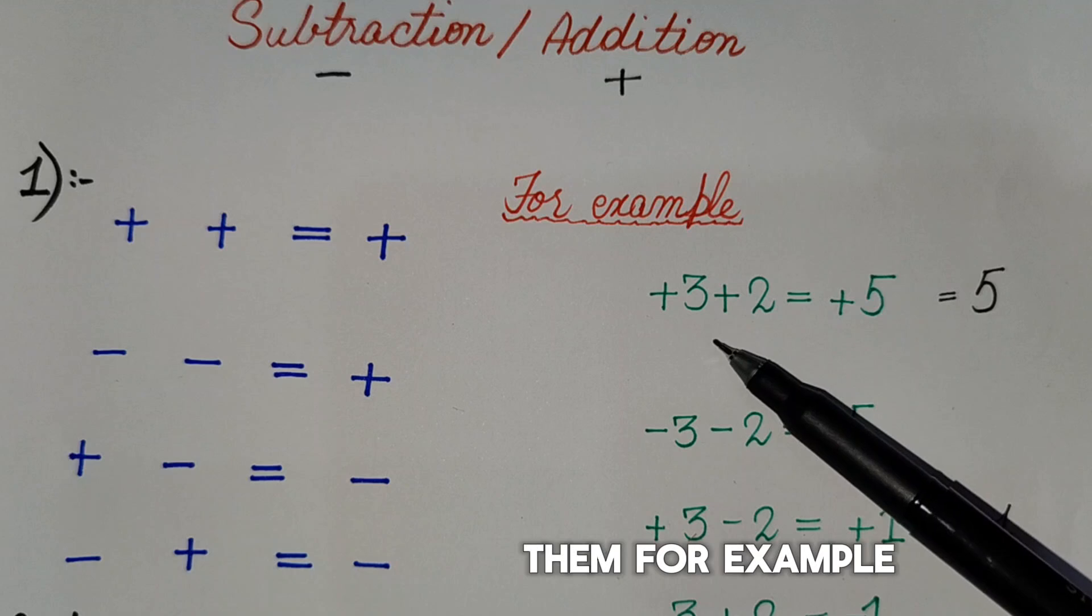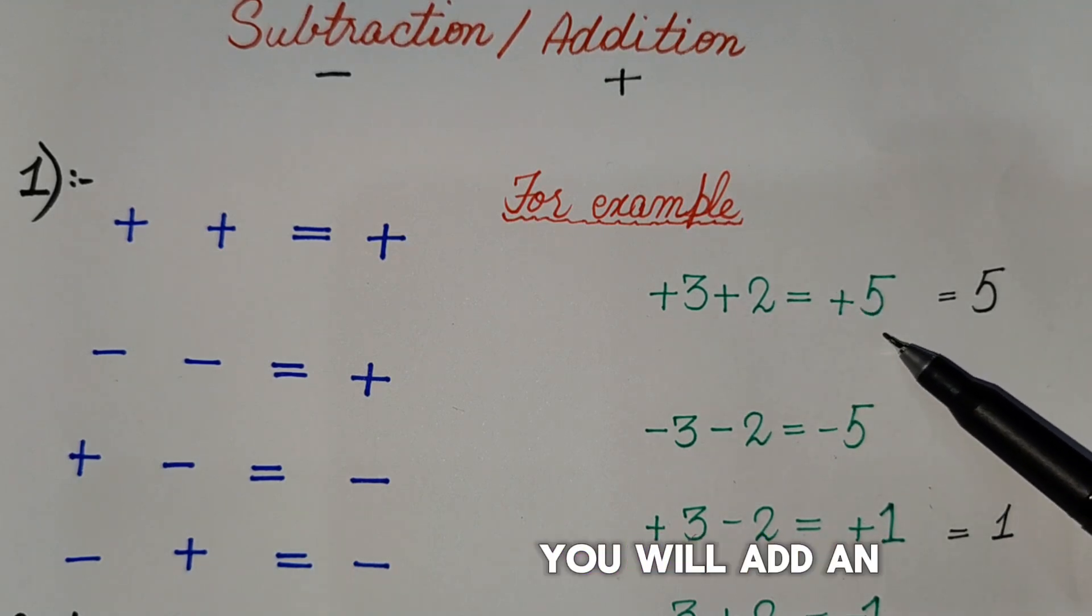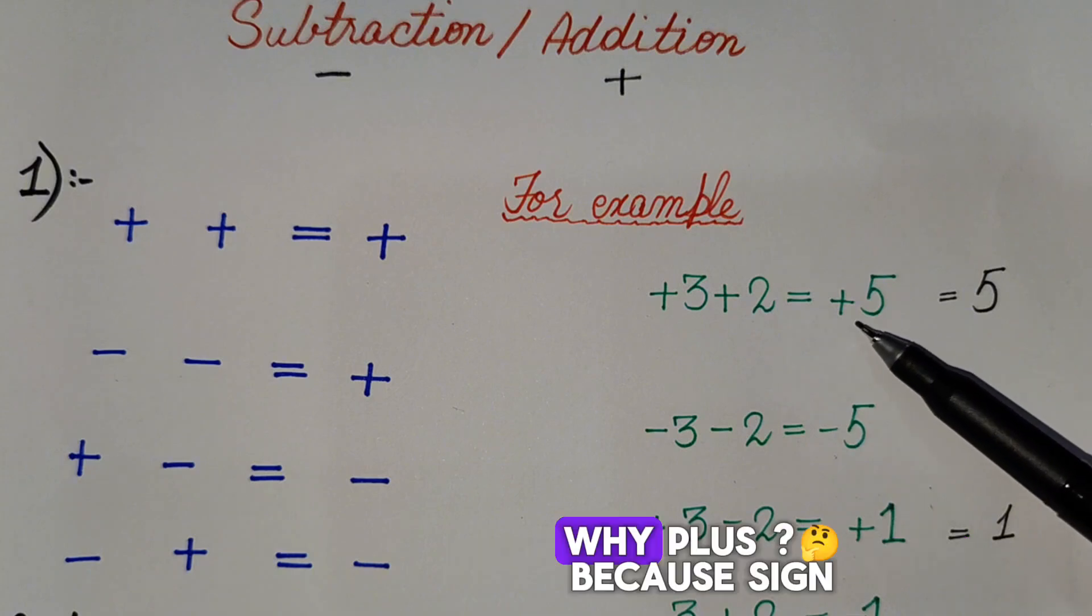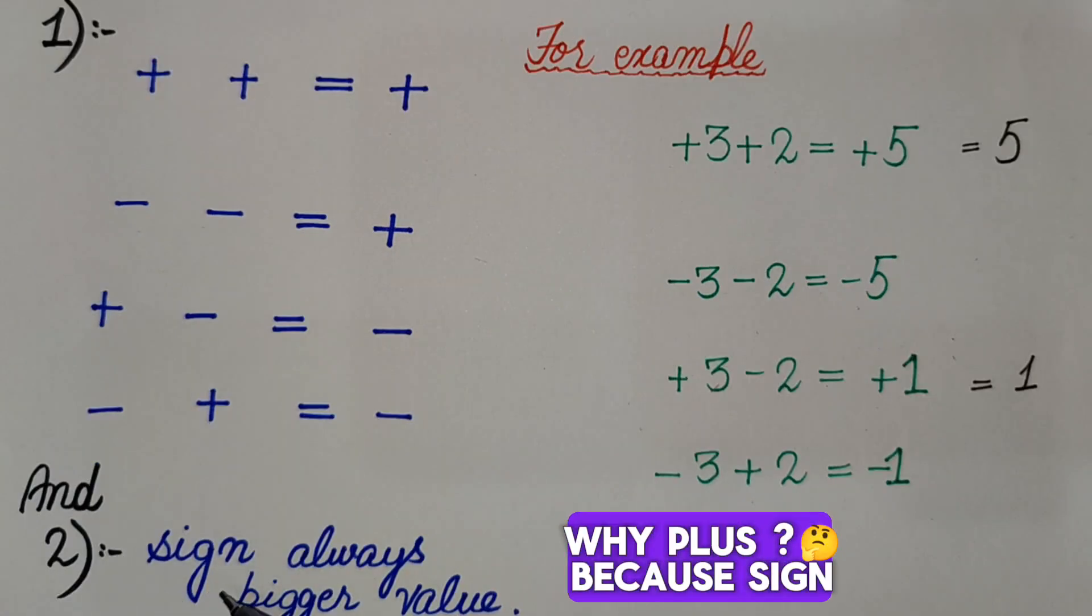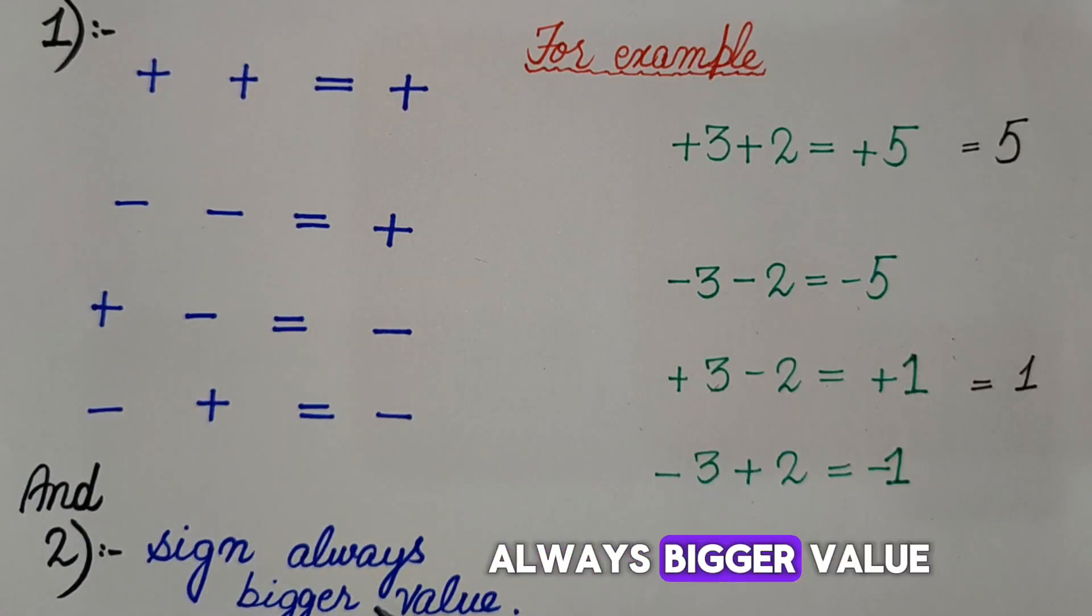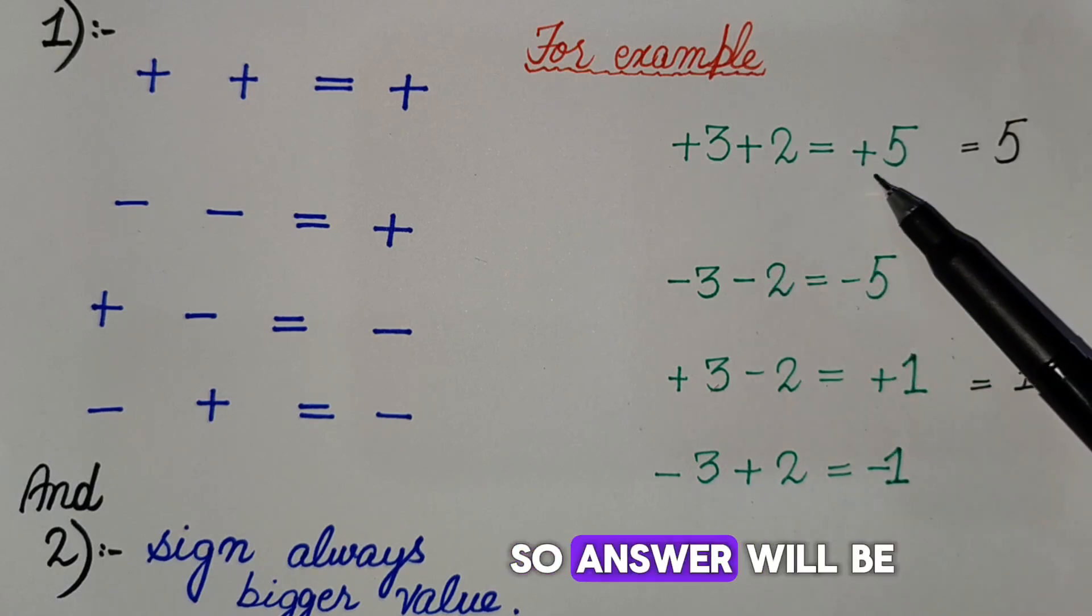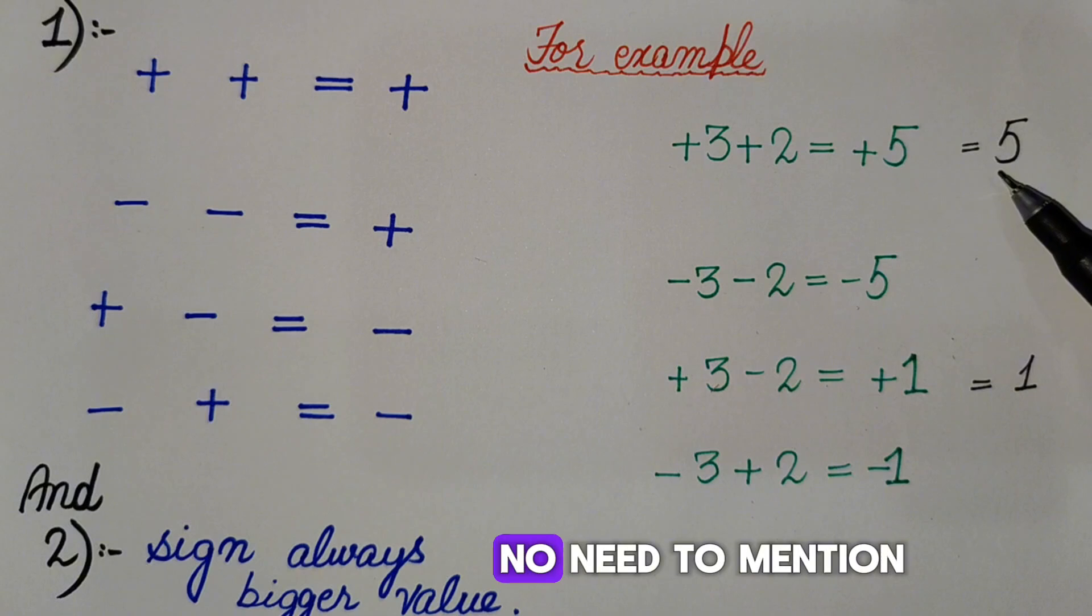For example, plus three plus two, you will add and answer will be plus five. Why plus? Because sign always bigger value. Bigger value is three, three have plus sign, so answer will be plus five. No need to mention plus sign in the start.